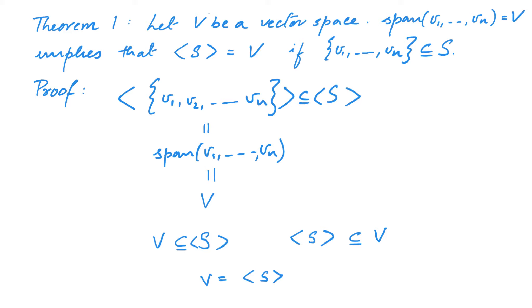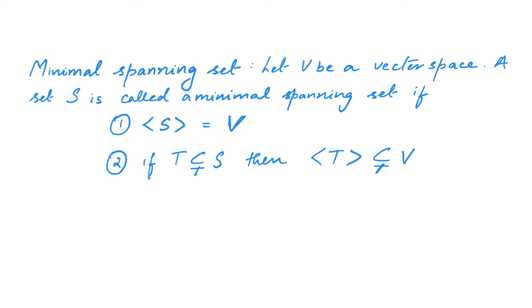Even though the statement was kind of obvious, it helps to recognize this fact because it will guide a lot of further study. Thus, the smaller a spanning set, the more interesting it would be. Therefore, we will be most interested in a minimal spanning set. A minimal spanning set is rigorously defined as follows: let V be a vector space. A set S is called a minimal spanning set if S spans V — in other words, the smallest subspace containing S equals V — and moreover, if you take any set that is smaller than S, meaning any set strictly contained in S, then the span of T is also a strict subspace of V.